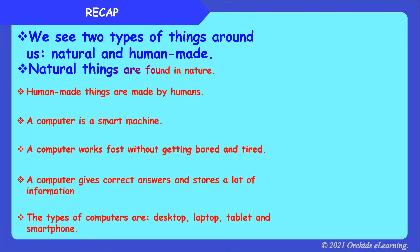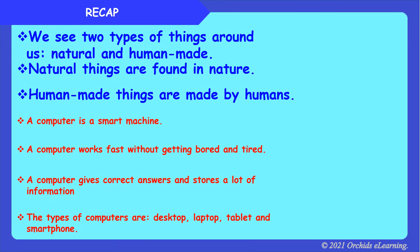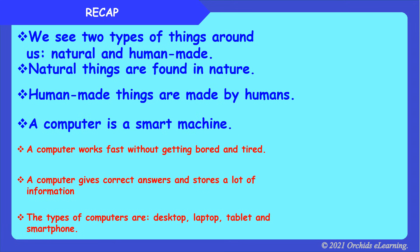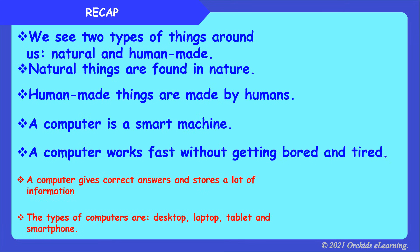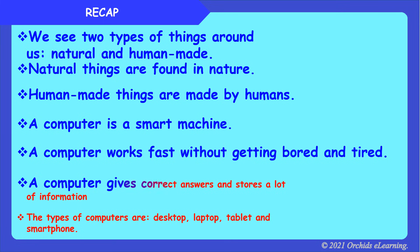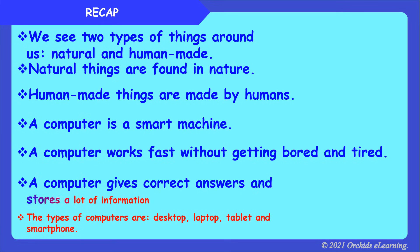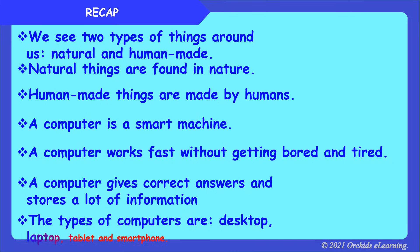Recap: We see two types of things around us — natural and human-made. Natural things are found in nature; human-made things are made by humans. A computer is a smart machine. A computer works fast without getting bored and tired, gives correct answers, and stores a lot of information. The types of computers are desktop, laptop, tablet, and smartphone.